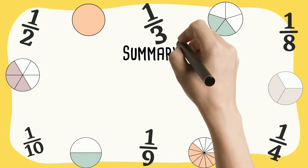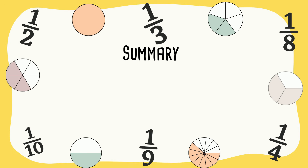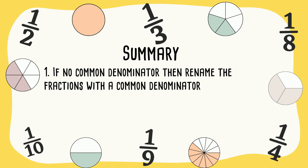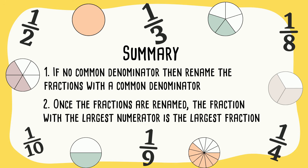In summary, you can compare two fractions. First, if there's not a common denominator, you can rename the fractions with a common denominator. Once they are renamed, all you need to do is look at the top number — the numerator — and the fraction with the larger numerator will be the larger fraction. Hope this was helpful.